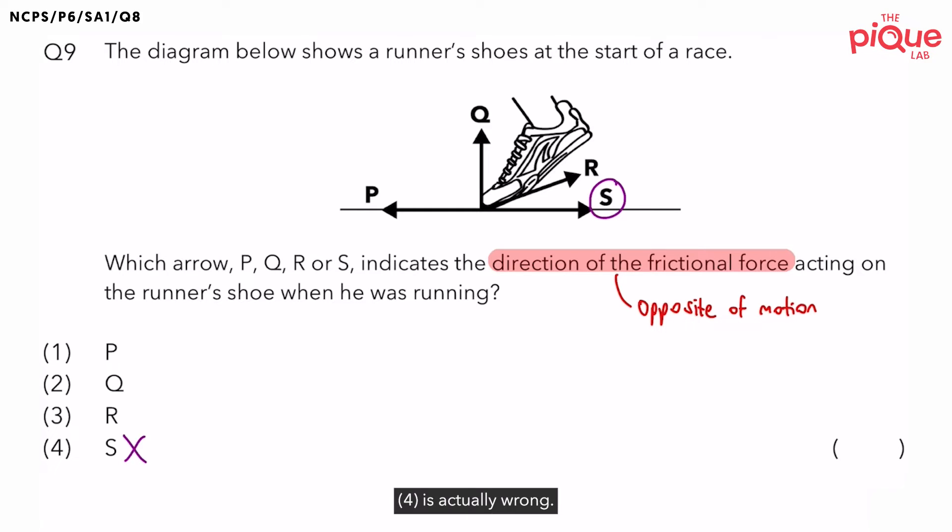Now, whenever you tackle questions like this, you must be very careful. Before you jump into finding the opposite direction of the motion, we must first recall, frictional force is a what kind of force? Frictional force is a contact force. That means it must always be between something and something else. In this case, they ask what is the direction of frictional force acting on which object? It was acting on the runner's shoe when he was running.